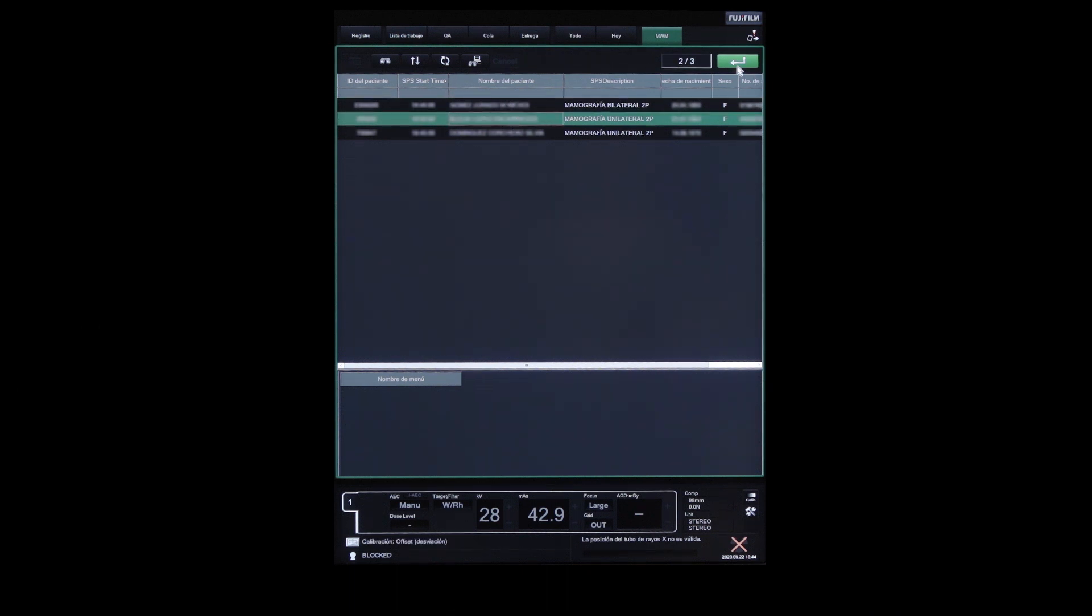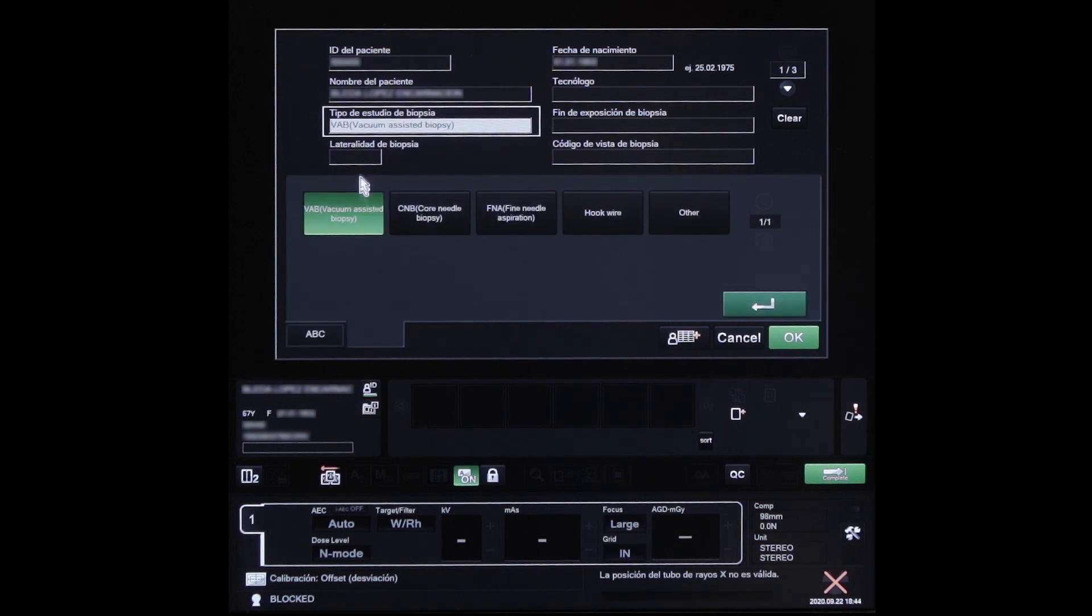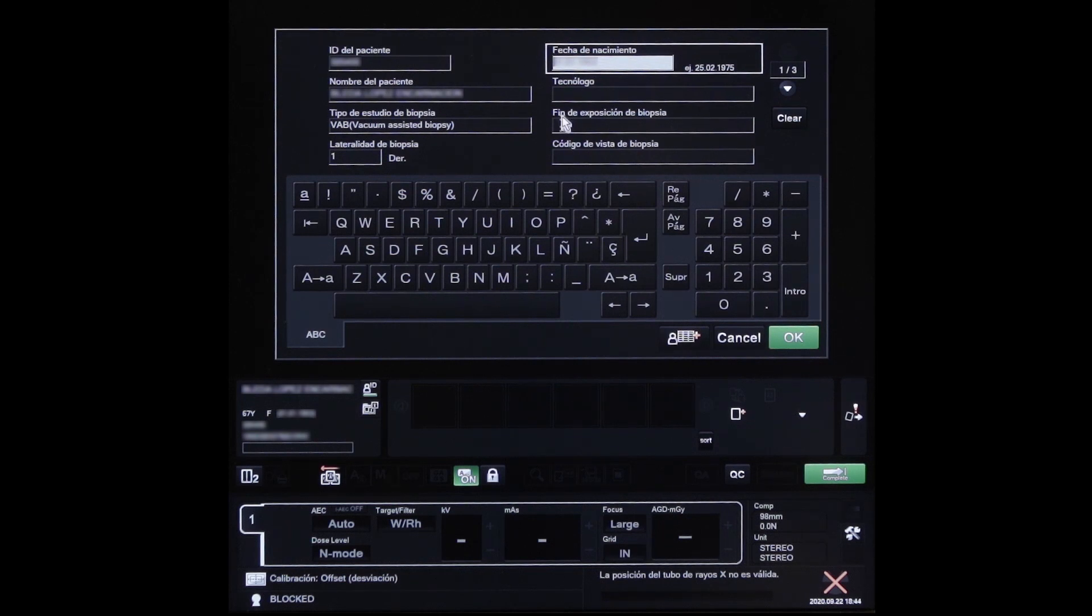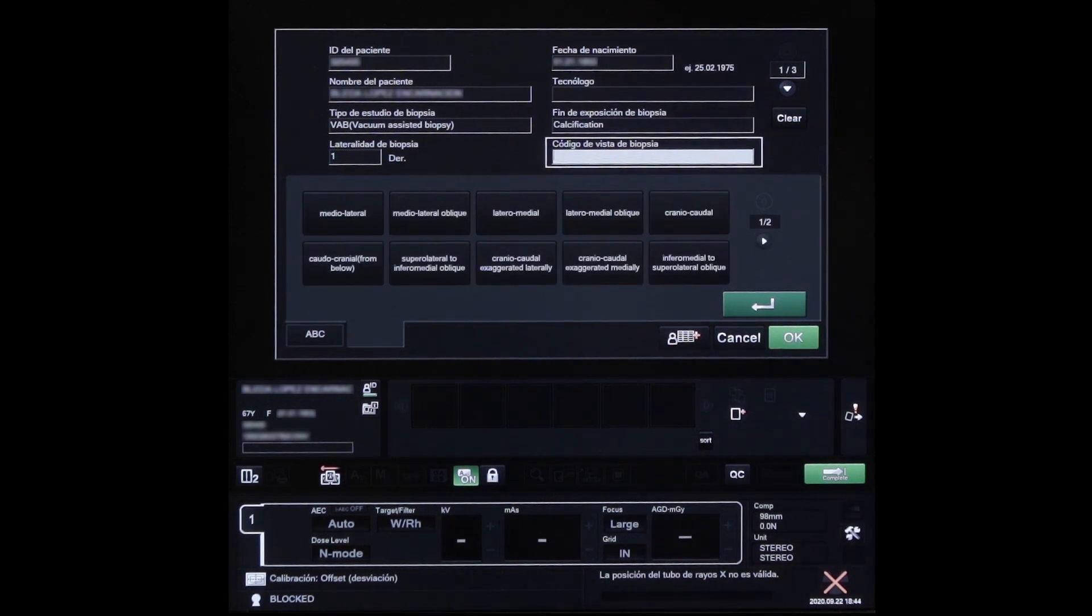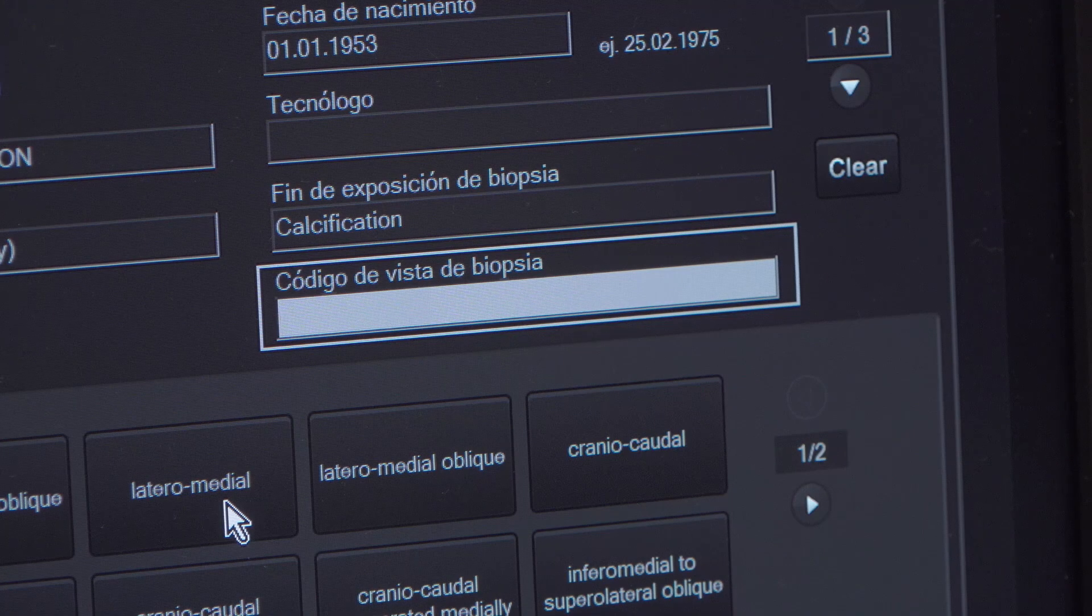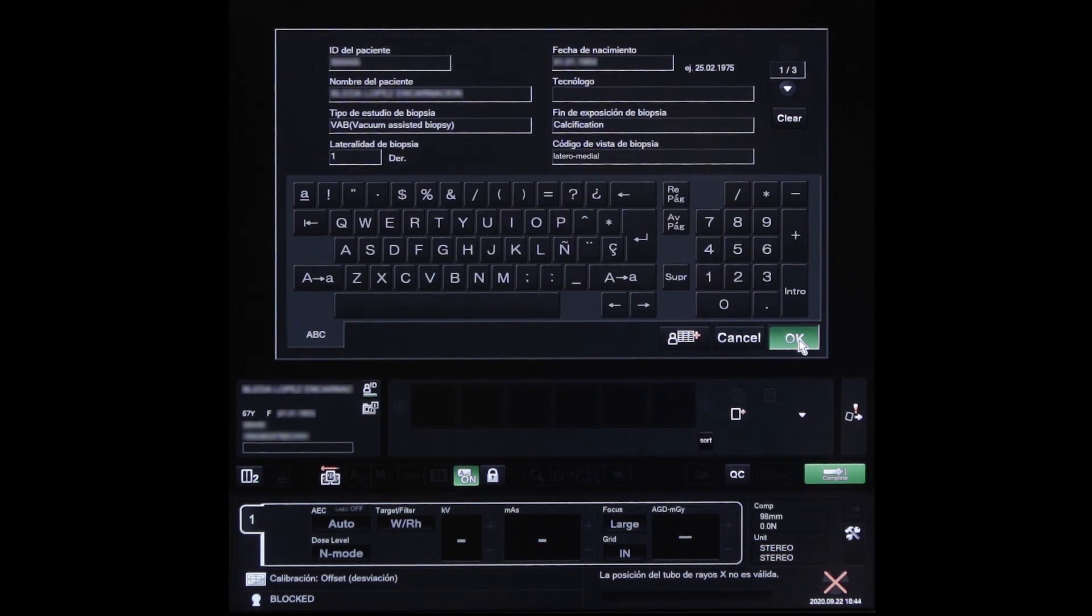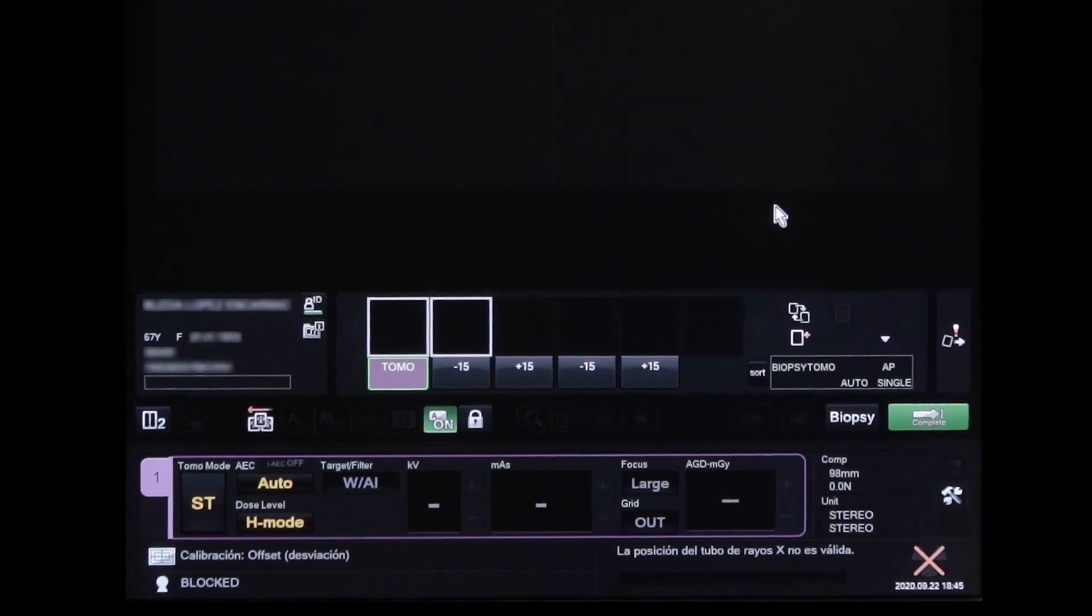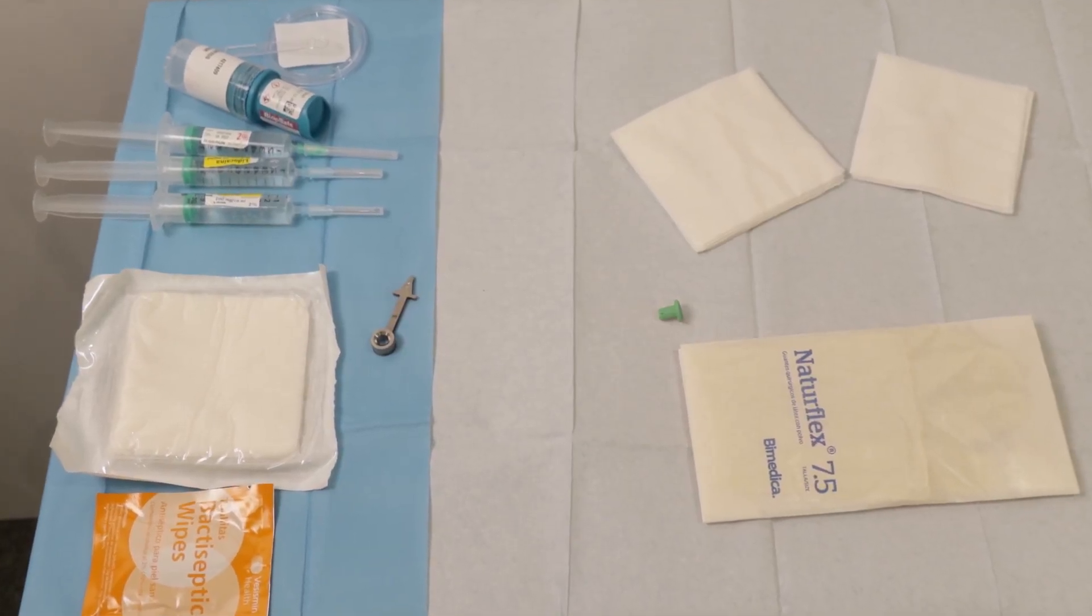Select the patient entry in the work list and add all necessary information as required: type of procedure, breast laterality, type of lesion, projection. Select Tomo Biopsy Protocol and add a stereo pair. Start the biopsy exam. All materials needed for the exam must be prepared in advance.